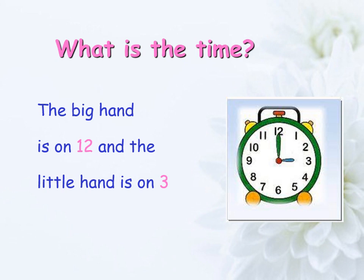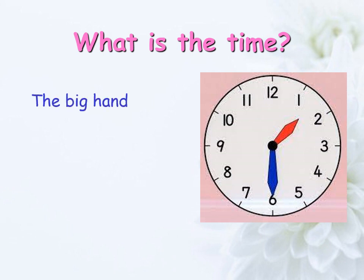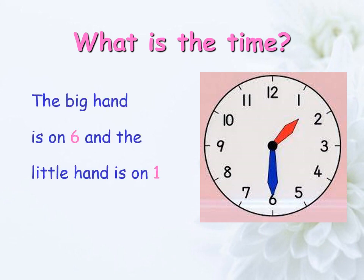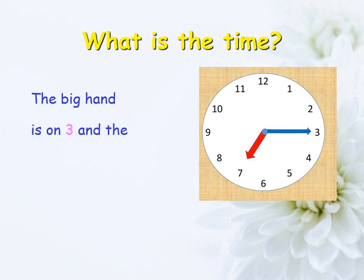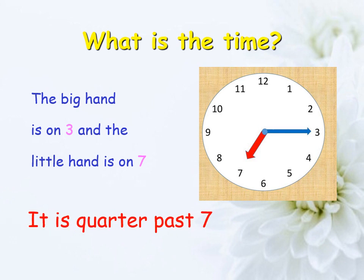Now we have some practice. What is the time? The big hand is on 12 and the little hand is on 3, so the time is three o'clock. What is the time? The big hand is on 6 and the little hand is on 1, so the time is half past one. What is the time? The big hand is on 3 and the little hand is on 7, so the time is quarter past seven.